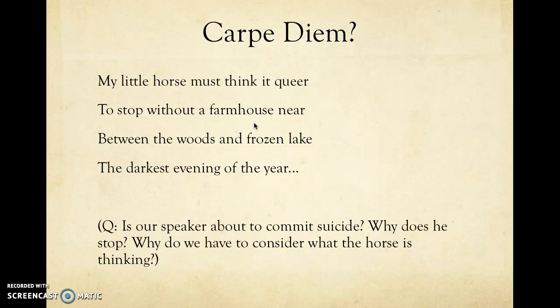The poem continues: 'My little horse must think it queer / To stop without a farmhouse near / Between the woods and frozen lake / The darkest evening of the year.' Some of you wrote about this poem this week. I'm wondering — what's actually going on here? Is this poem just about a person stopping to watch snow fill up the woods, or does the speaker have some other intention? My question is: is our speaker about to commit suicide? Why is he actually stopping, and why do we have to consider what his horse is thinking?